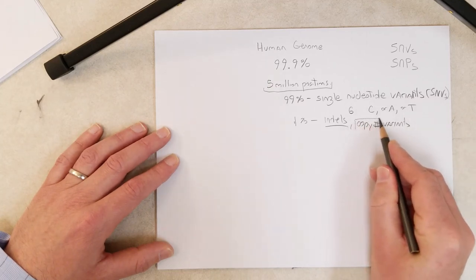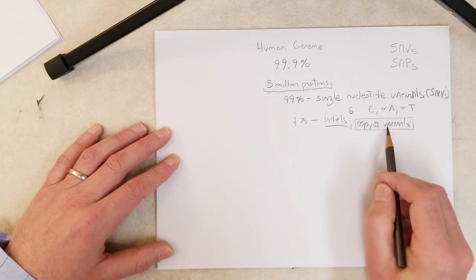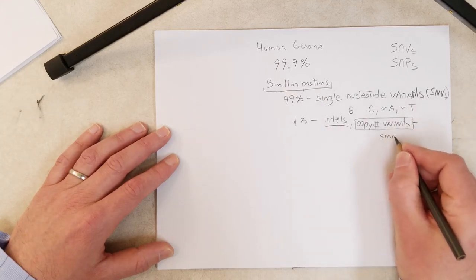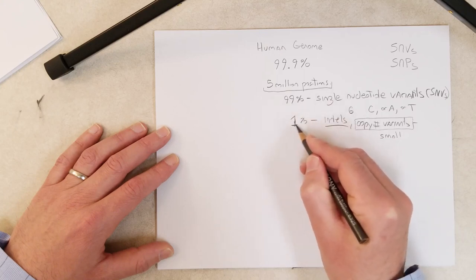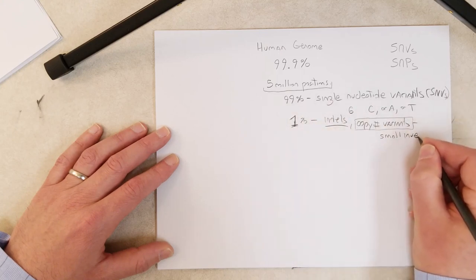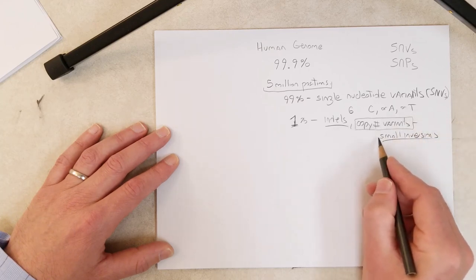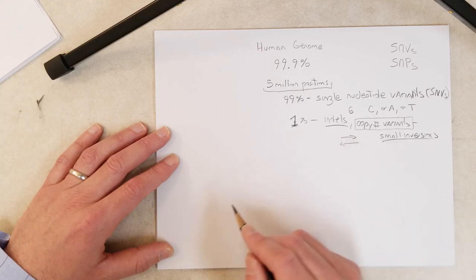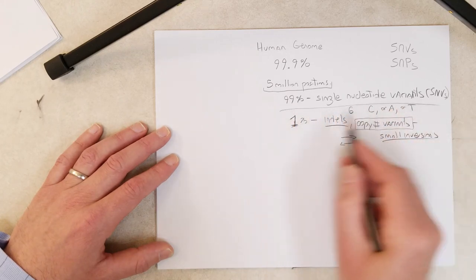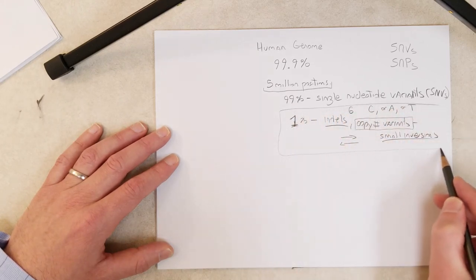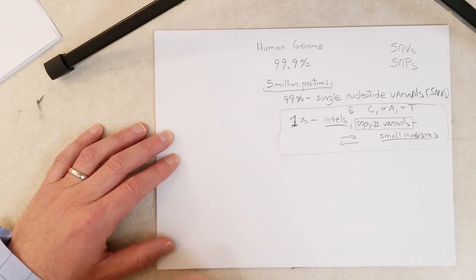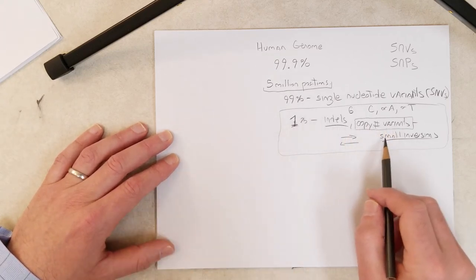Copy number variants could be small duplications or even gene duplications. Also included in that remaining one percent are small inversions — where a little bit of sequence, instead of going left to right, is flipped the other way. Scientists are still characterizing the importance of indels, copy number variants, and small inversions in different phenotypes.